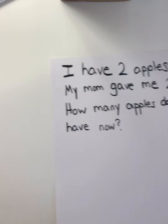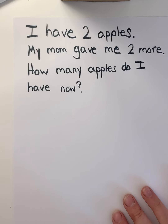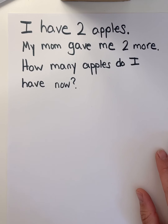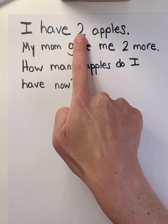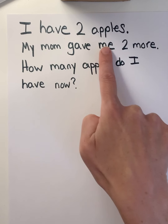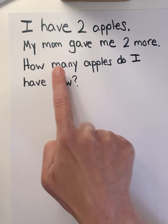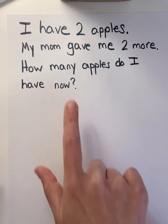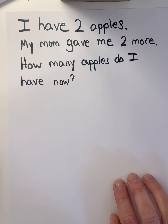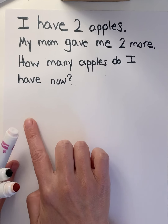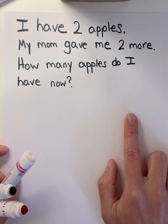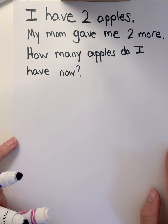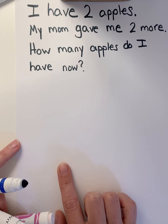Now you are going to work on your own story problem at your house. You are going to draw a picture and a number sentence to match what the story problem says. It says: I have two apples. My mom gave me two more. How many apples do I have now? Boys and girls, think about what the story is asking you — we're talking about apples. Think about how many you have and how many your mom gave you. Draw the picture first, then write a number sentence to match. You can challenge yourself and see if you can also write the number bond to match your number sentence.